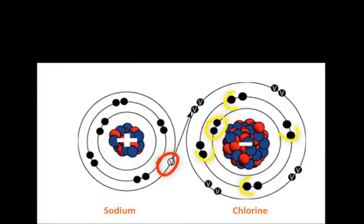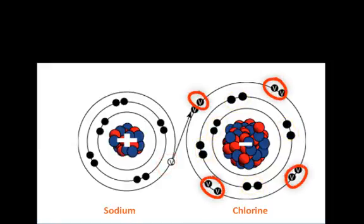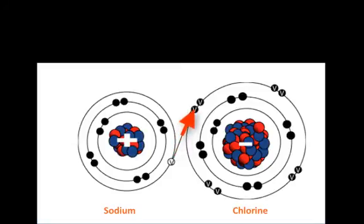A chlorine atom has 17 electrons, one pair in the first, four pair in the second, and seven in the third level. This leaves one valence electron unpaired. When the two come together, the strong electronegativity of the chlorine pulls the one electron from the sodium to fill its valence shell. The complete transfer of electrons from one atom to another creates two ions.